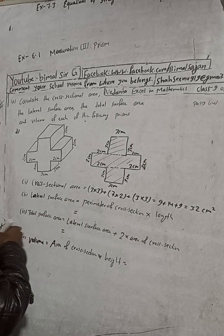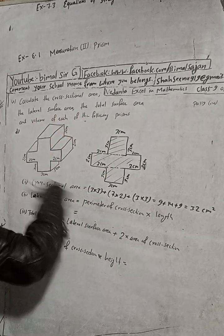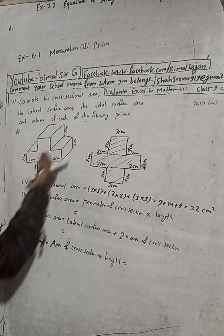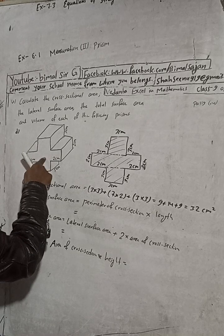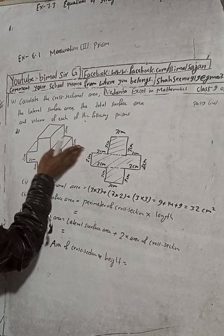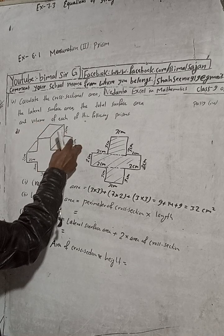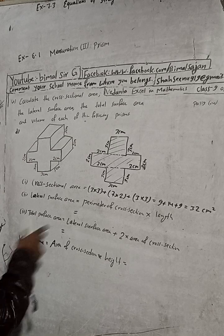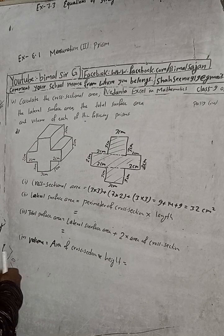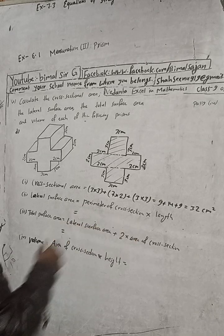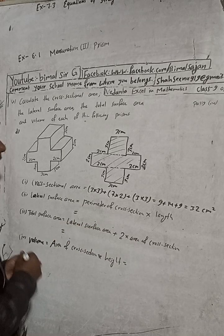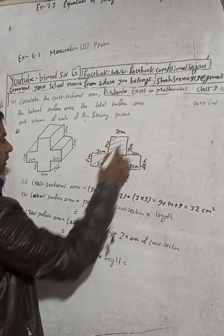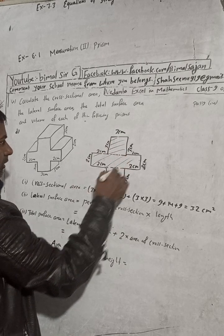The second part asks us to find the lateral surface area of this figure. Lateral surface area means not the front part (which is the area of cross section) and not the back side — but the sides, from the left side or right side. Whatever part we see from the sides is called the lateral surface area. The formula is: perimeter of cross section × length. So what is the perimeter of the cross section? This here is the cross-section part.